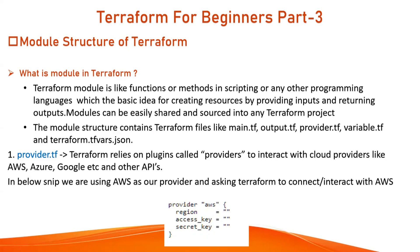What is provider.tf? Terraform relies on plugins called providers to interact with cloud providers like Azure, AWS, GCP, and other APIs. In this example, we are using AWS as our cloud provider and asking Terraform to connect with AWS. This is how you define the provider in provider.tf — the provider is AWS, you specify the region such as US or Mumbai, along with the access key and secret key.